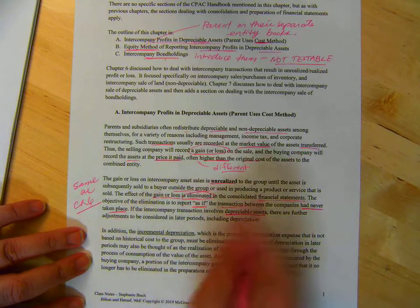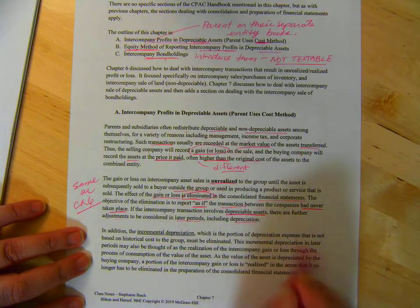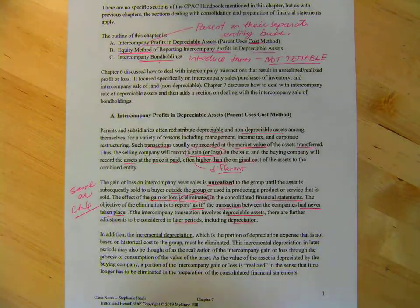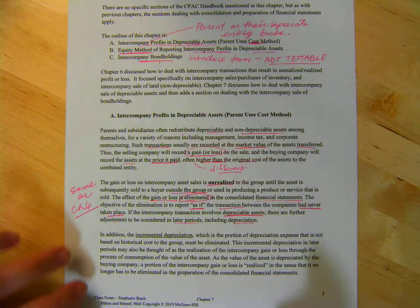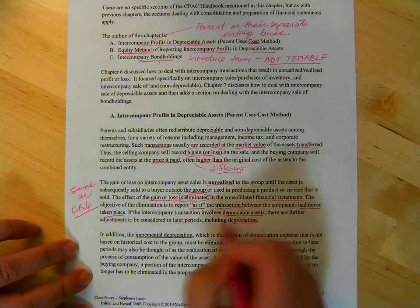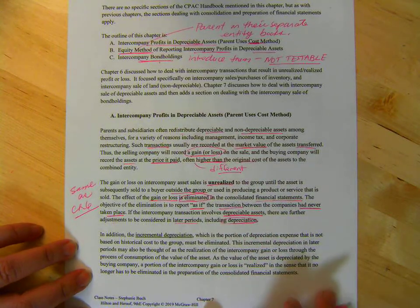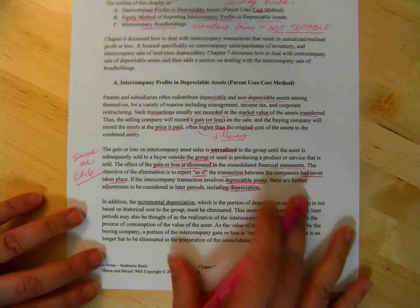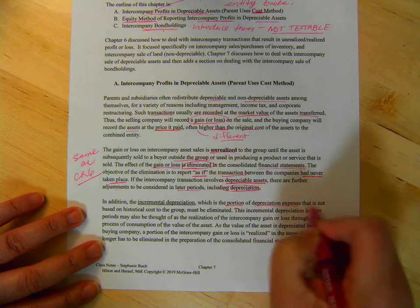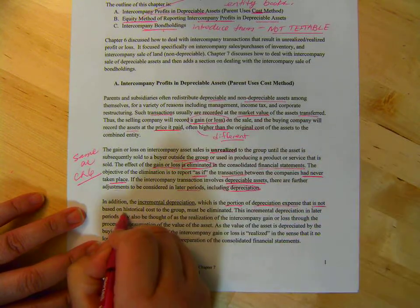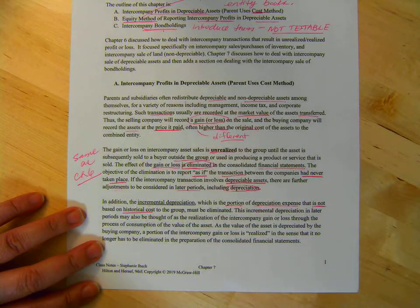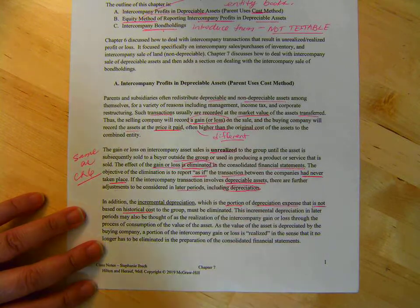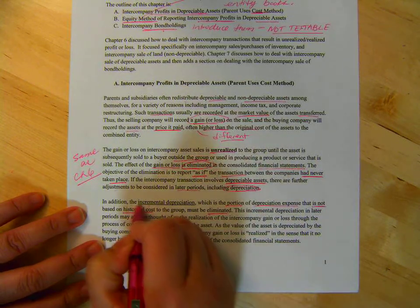Now, we're going to talk about things like equipment. There are further adjustments to be considered in later periods, including depreciation. Similar to the land where we had recording it every year until it's sold. Same with depreciable assets, except we also have to add on depreciation or amortization. So, the incremental depreciation is what it's called. The portion expense that is not based on historical cost, but from the sale of one to the other. Parent to sub, downstream or sub to parent. So, that has to be eliminated.